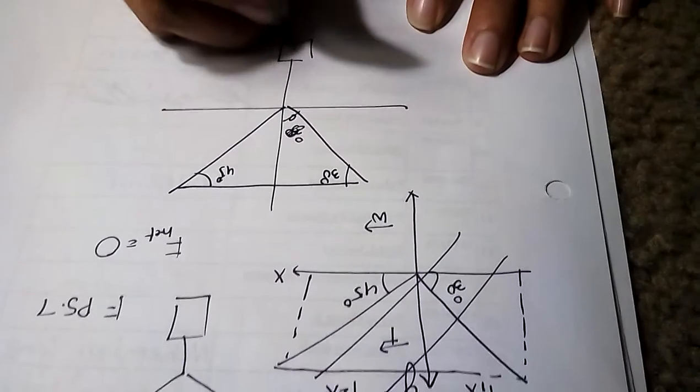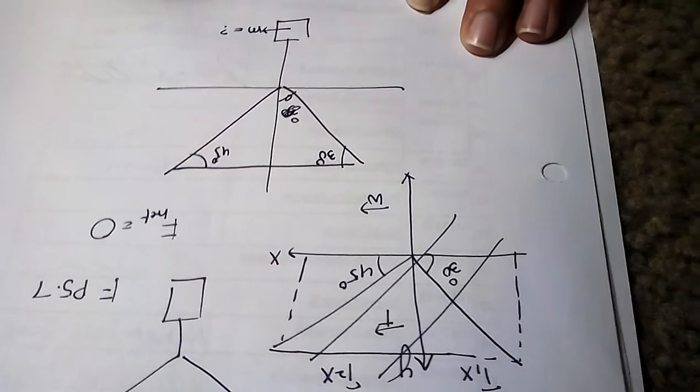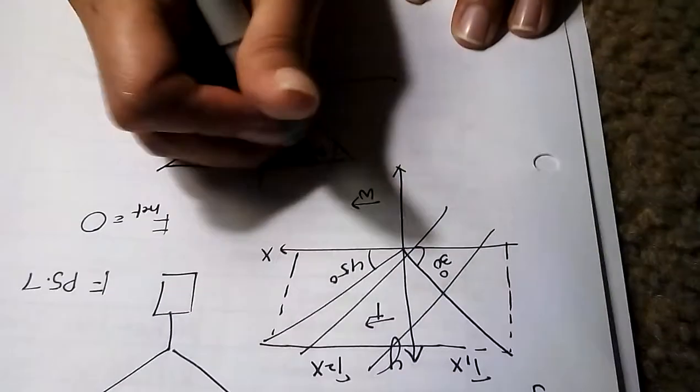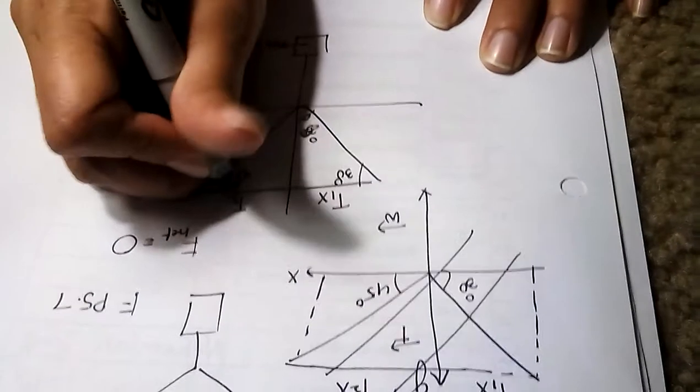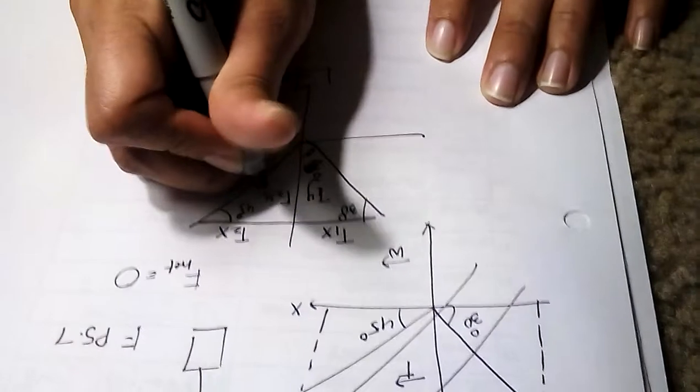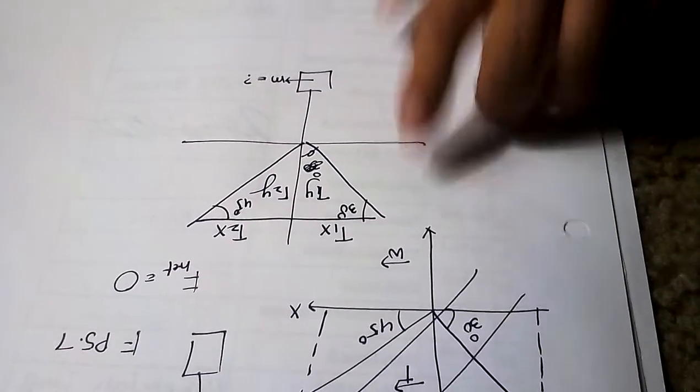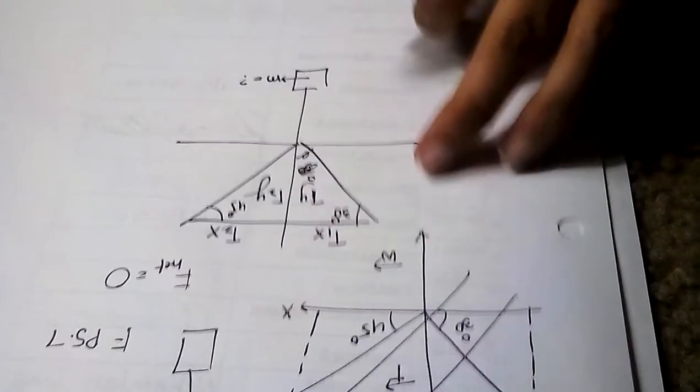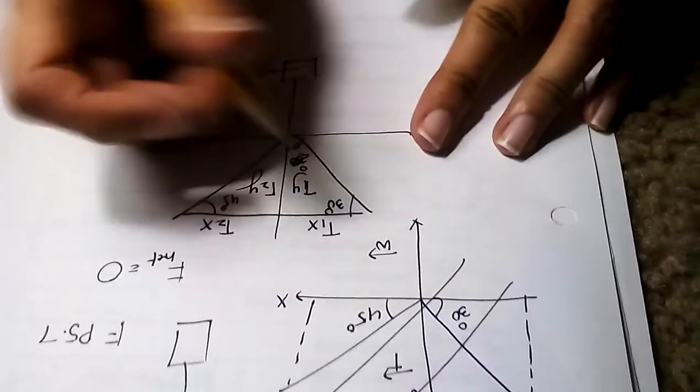And then there will also be components. This will be your t1x, this will be your t2x. Actually, I drew the angle wrong. I can do it again up here as the book shows you like this way.